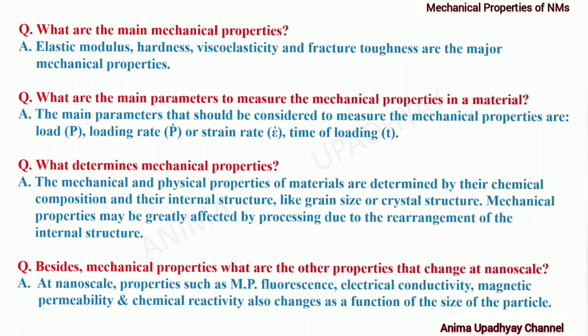What are the main parameters to measure the mechanical properties in a material? The main parameters that should be considered are load, loading rate or strain rate, and time of loading. Load is designated by capital P, loading rate by P-dot, strain rate by epsilon, and time of loading by small t.